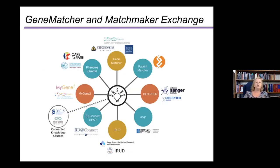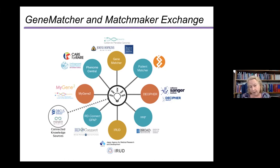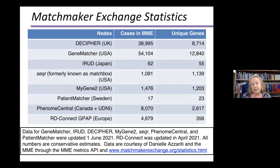GeneMatcher is also part of an international data sharing initiative. We were founding members with Phenome Central and Decipher of what is now known as the Matchmaker Exchange. It's a federated system that allows exchange of information so that people don't have to deposit data into each node separately. GeneMatcher is the largest by far, and it and Phenome Central allow anyone to submit; the others are collections of large sequencing efforts.